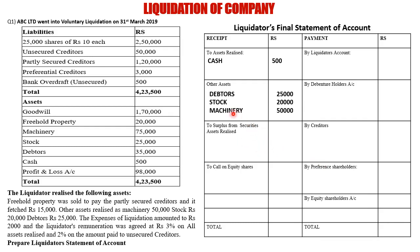Next is surplus from securities — assets realized against liabilities. Freehold property was secured against creditors and fetched Rs. 15,000. In the working: freehold property realized Rs. 15,000, used to clear partly secured creditors of Rs. 15,000, so the net outer column is nil. Partly secured creditor was Rs. 1,20,000 but only Rs. 15,000 was realized, so the entire Rs. 15,000 is deducted and the result is nil.